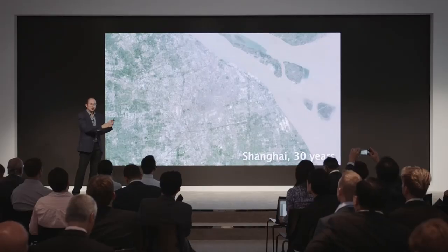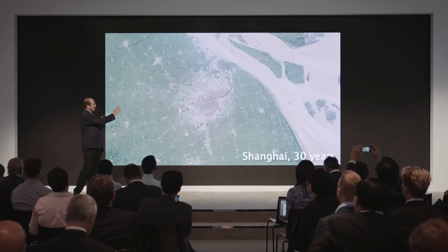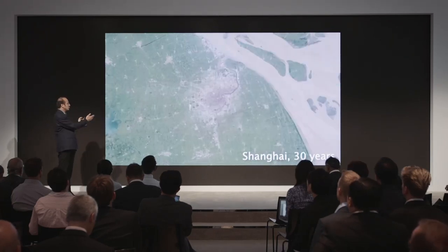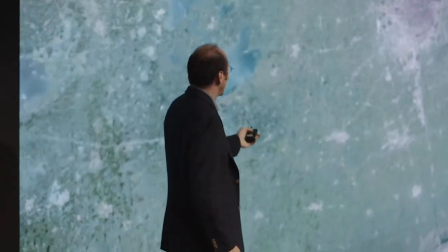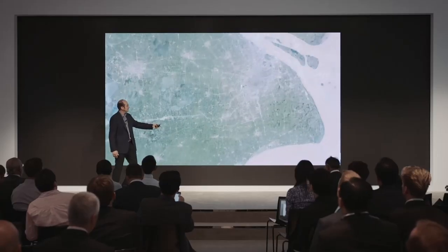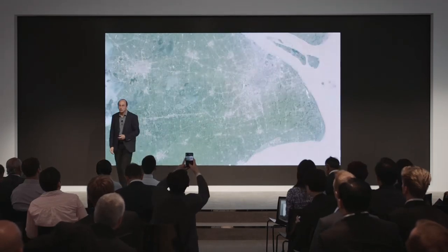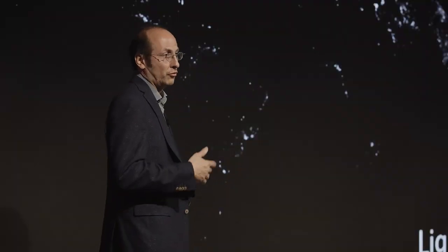The satellite imagery that lets us see deforestation lets us see many different effects. Here is an example: Shanghai over 30 years lets you see land use and the changes from farmland to urban land areas. This allows you to understand both scale and categorization of change over time.